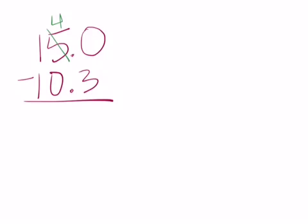I can make that 4 ones and this can be thought of as 10 tenths. 10 tenths minus 3 tenths makes 7 tenths. 4 minus 0 is 4. And 1 minus 1 is nothing and bring down, bring down, oh, bring down my decimal to me, to me.